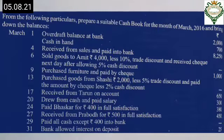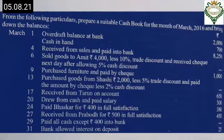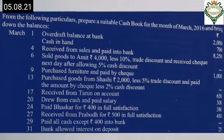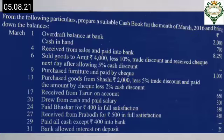The next transaction on 13th March: purchased goods from Shashi for ₹2000, with a 5% trade discount received. Payment is made by check, so we record in the bank column. At the time of payment, we also got a 2% cash discount. For this transaction we also have to do a working note.